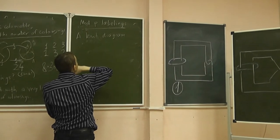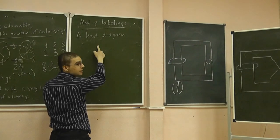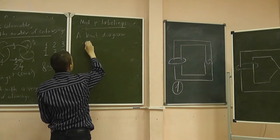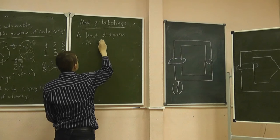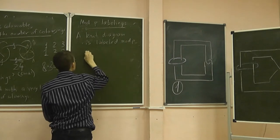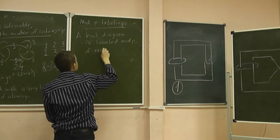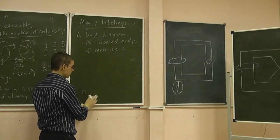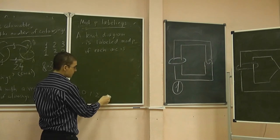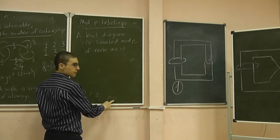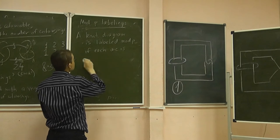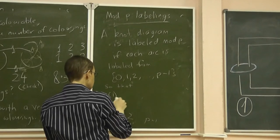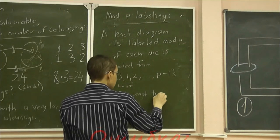A mod p labeling of a knot diagram is where we take three and replace it with any number. So a knot diagram is labeled mod p. So instead of 0, 1, 3, 0, 1, 2, let's just go up to 0, 1 in this notation p minus 1. Each arc is labeled p minus 1, so then 1 to p colors are used.